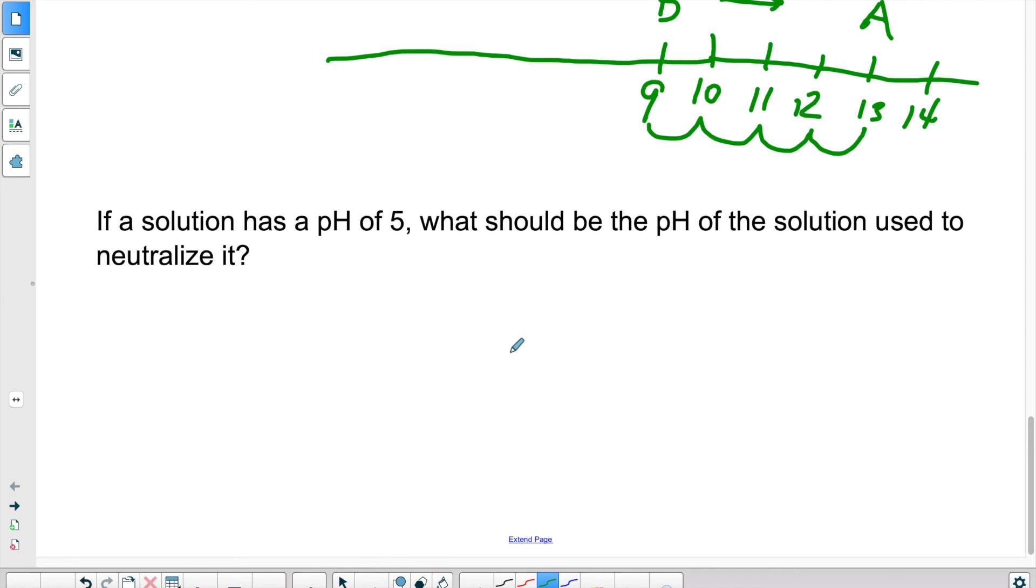So here we have a third question. If a solution has a pH of 5, what should be the pH of the solution used to neutralize it? So again, we need a pH scale.